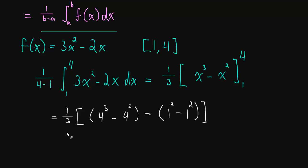And now we just evaluate. So what is 4³? That's 4 times 16 which is 64. 64 minus 16. Well, 1³ minus 1, that's just 0. So minus 0. So we don't even need to write that. 64 minus 16, that looks like 48. So this is equal to 48 over 3. And let's see, that's 16, right? So the average value of this function, 3x² - 2x, on this interval, the average value is 16. So that's kind of interesting. We have an average value problem now. See you in the next video.